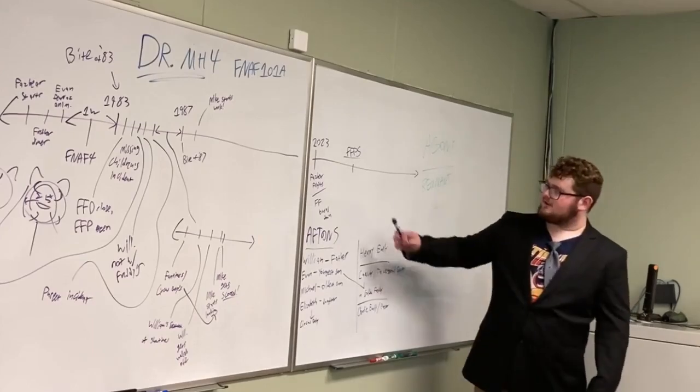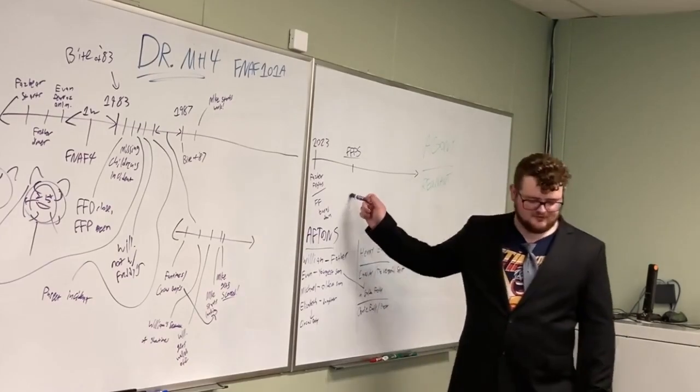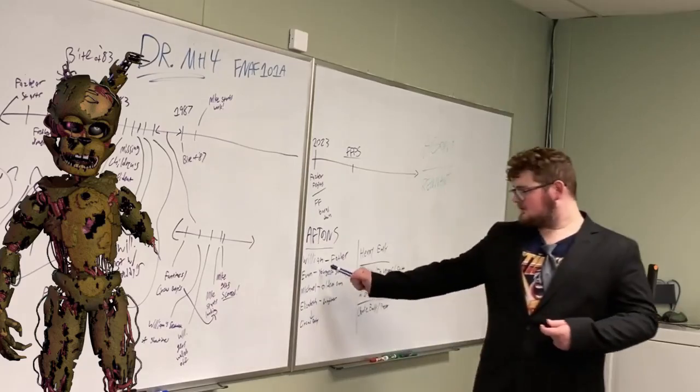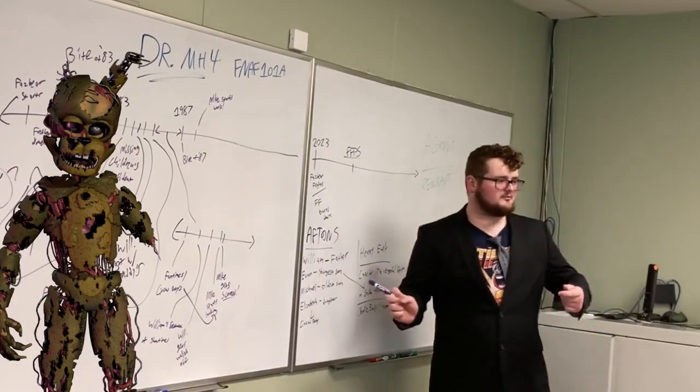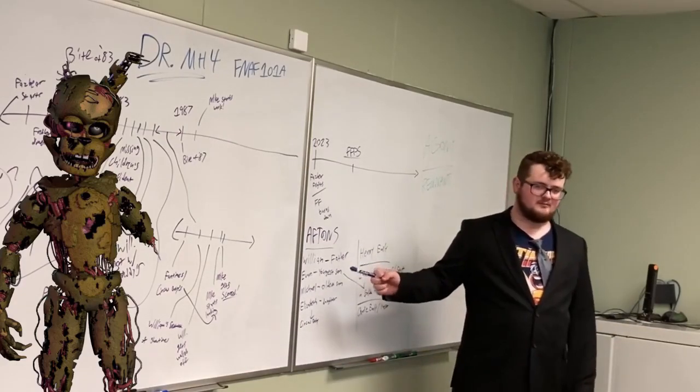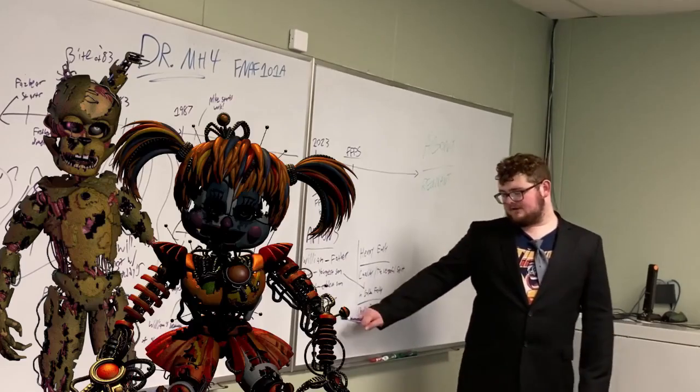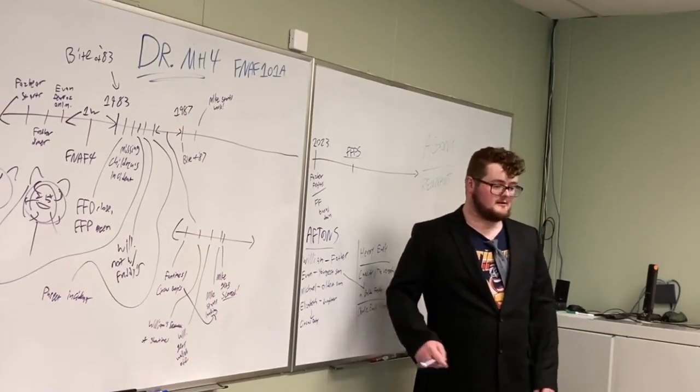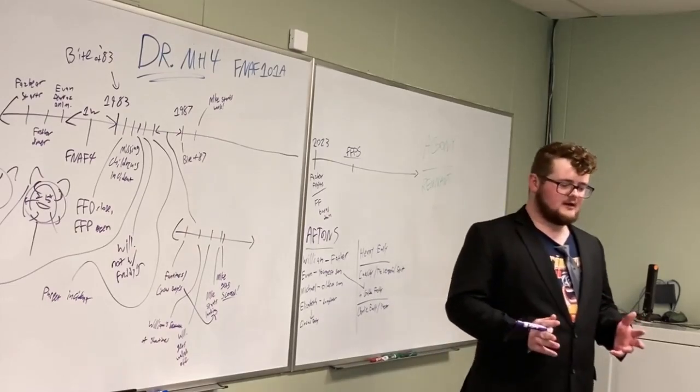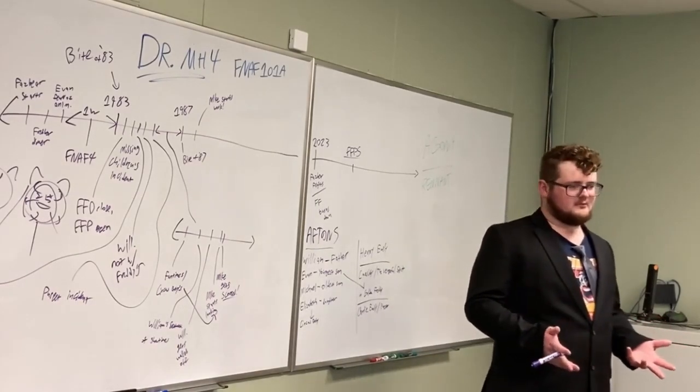Springtrap, now known as Scrap Trap, after damage by the burns from the last location. You have Elizabeth, who, as we know, Circus Baby was part of Ennard. But in between games, which is very poorly explained, but in between games, Ennard kicked Baby out of their group.